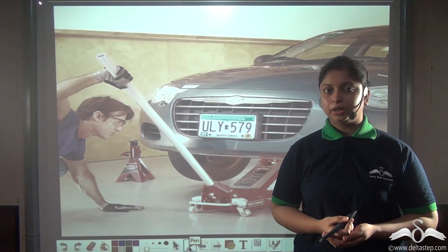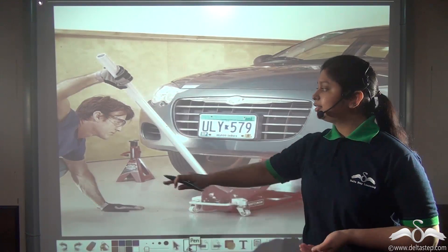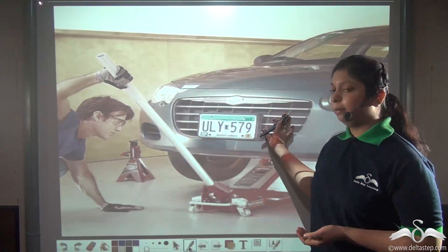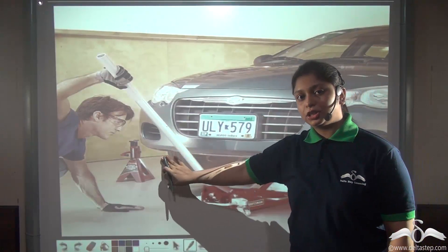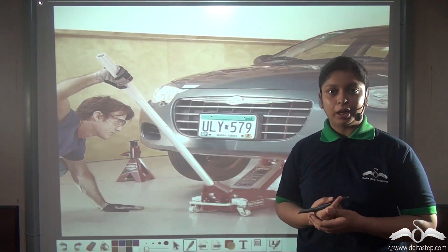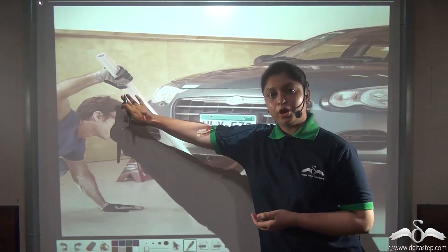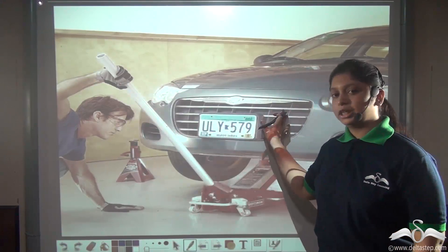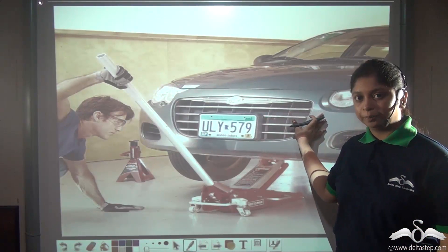You are familiar with the term machine. Here you can see this man is using a car jack to lift up a car. In this case, the car jack is also a simple machine. Why? Because by applying a small force or a small effort, we can lift up heavier objects like this heavy car.